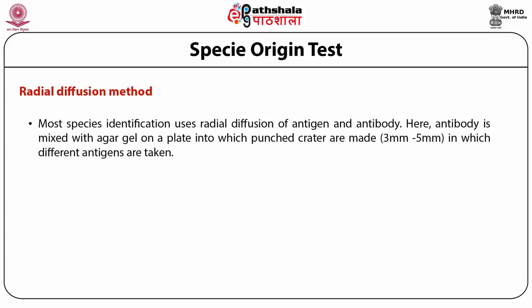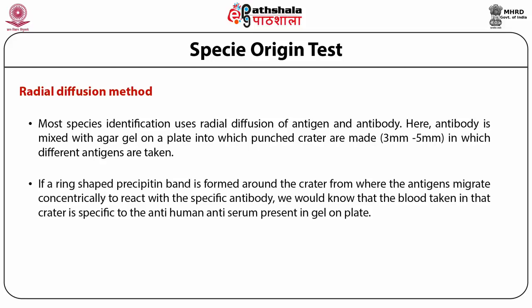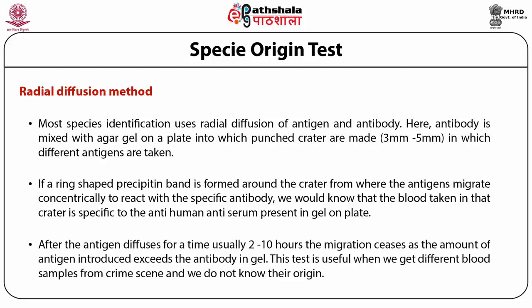The second is the radial diffusion method. Most species identification uses radial diffusion of antigen and antibody. Here, antibody is mixed with agar gel on a plate into which punched wells (3 to 5 micrometers) are made, in which different antigens are placed. If a ring-shaped precipitin band is formed around the well from where the antigens migrate concentrically to react with a specific antibody, we would know that the blood is specific to the anti-human antiserum present in the gel. The migration ceases as the amount of antigen introduced exceeds the antibody in gel, usually after 2 to 10 hours. This test is useful when we get different blood samples from a crime scene and do not know their origin.